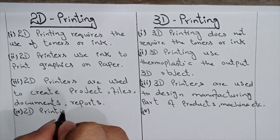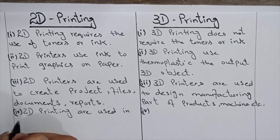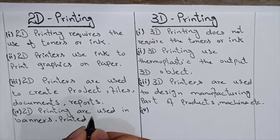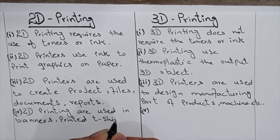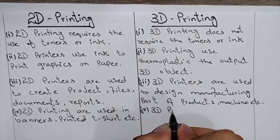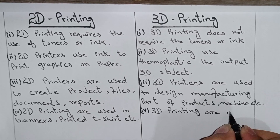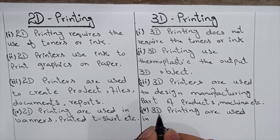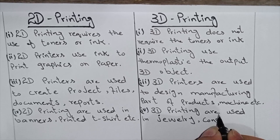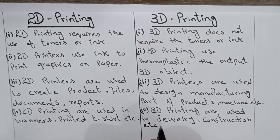2D printing is used in banners, printed t-shirts, etc., while 3D printing is used in jewelry, construction, and more.